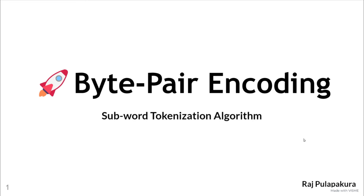Today, we're going to be going through the BytePair encoding algorithm, which is a subword tokenization algorithm used by many famous natural language processing models, including GPT. Let's get right into it.